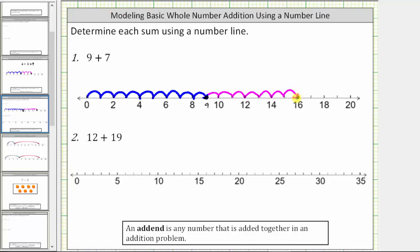Now we know nine plus seven equals 16. Where again, nine and seven are the addends, 16 is the sum.